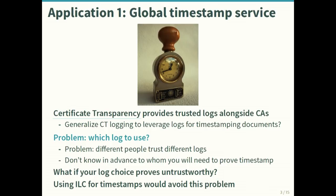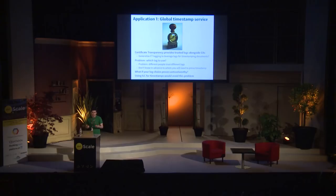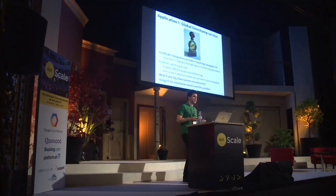Here's a warm-up application: suppose you wanted a global timestamp service. As a first approximation you might look at certificate transparency, which is this parallel infrastructure to CAs that provides secure logs. You could generalize certificate transparency to allow people to log arbitrary documents and get a timestamp by having a document inserted in a log. The first problem is you have to pick one of these logs, but different people trust different log authorities — and at the time you're getting a timestamp, you might not know who you'll need to prove it to later.